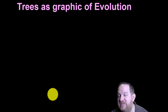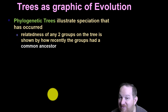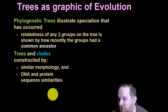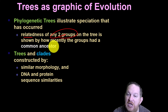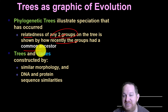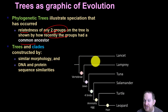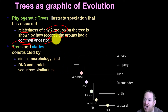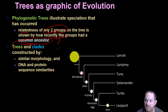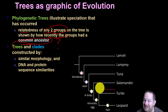These trees show us basically a graphic of evolution. They show how speciation occurred because the relatedness of any two groups on the tree is shown by how recent their common ancestor is. Take for example this group: a lancelet, a lamprey, a tuna, a salmon, a turtle, a leopard. If the question was which organisms share the most recent common ancestor, you'd go to the ones that are closest together and have the least distance.